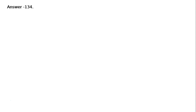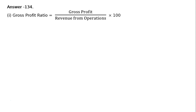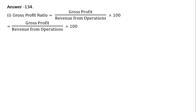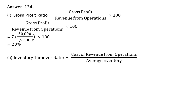Find out Gross Profit Ratio, Inventory Turnover Ratio, and Trade Receivables Turnover Ratio. First part: Gross Profit Ratio is equal to Gross Profit upon Revenue from Operations into 100. That is equal to Rs. 30,000 upon Rs. 1,50,000 into 100. That is equal to 20%. This is the Gross Profit Ratio.